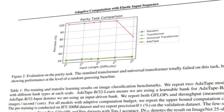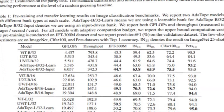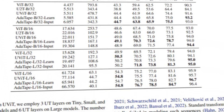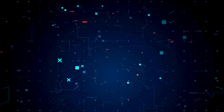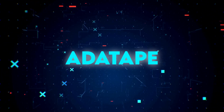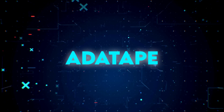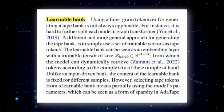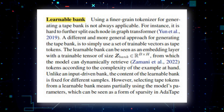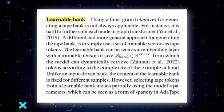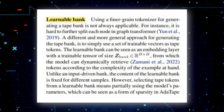If it is not possible to tokenize a graph transformer node at a different level of abstraction, then the input-driven method may not be feasible. In such cases, Adatape provides a more general approach by using a set of trainable vectors as tape tokens, known as the Learnable Bank. This approach acts as an embedding layer, allowing the model to dynamically retrieve tokens based on the complexity of the input example.